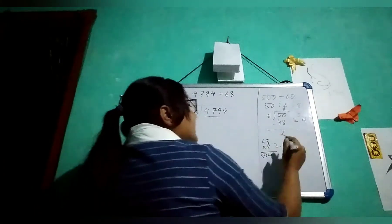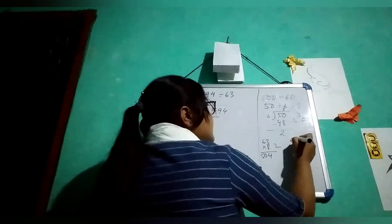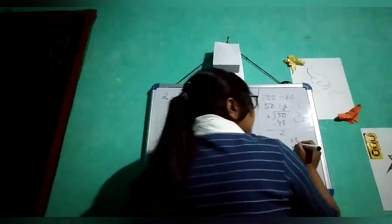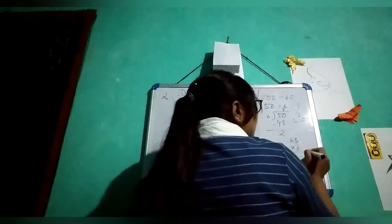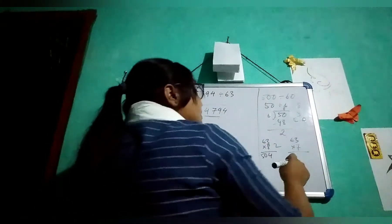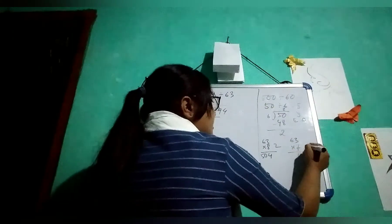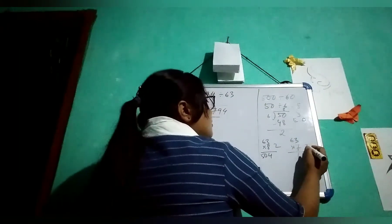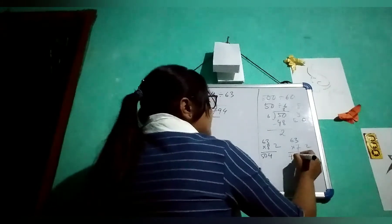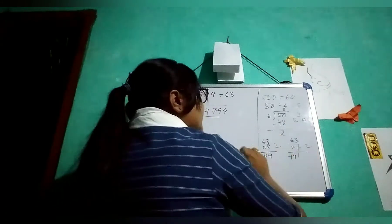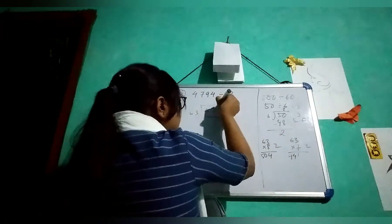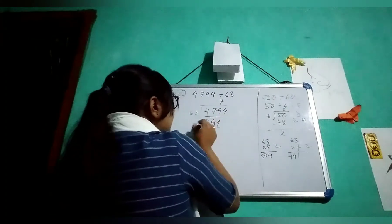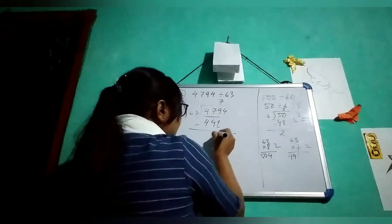504 is too much, so you take 1 less — 63 into 7. 3 sevens are 21, 6 sevens are 42, so 441. We can take 7 here. 7 will give 441. When you do minus, you will get 38.